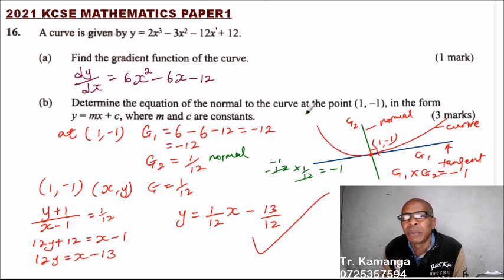You are being tested whether you remember, you know what is the normal, you know how to get the gradient and the relationship of the gradient of two perpendicular lines. So that's what is being tested here. So if you have that, then you should be able to get the four marks in this question.